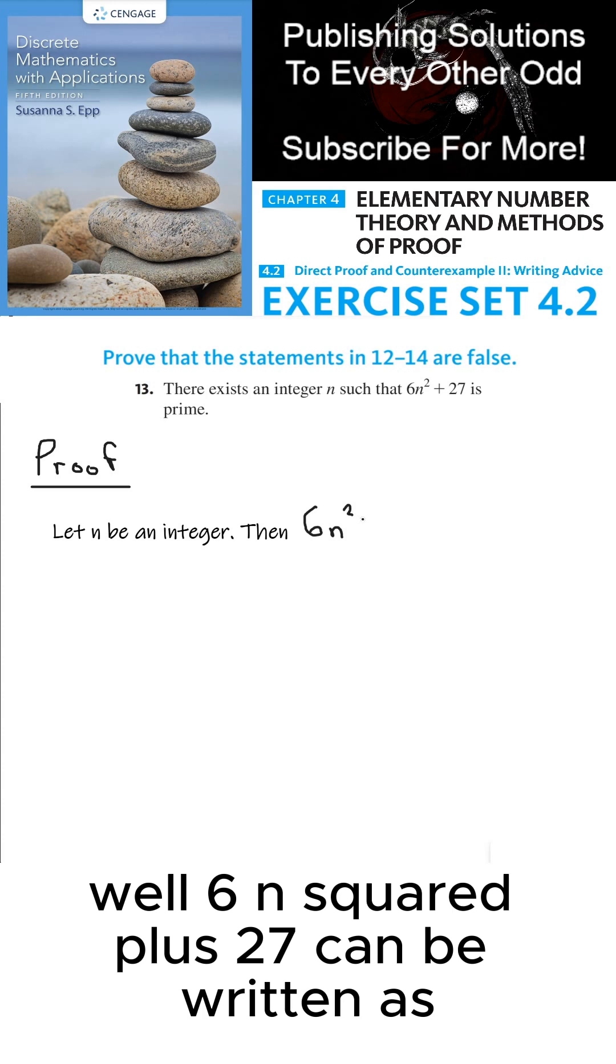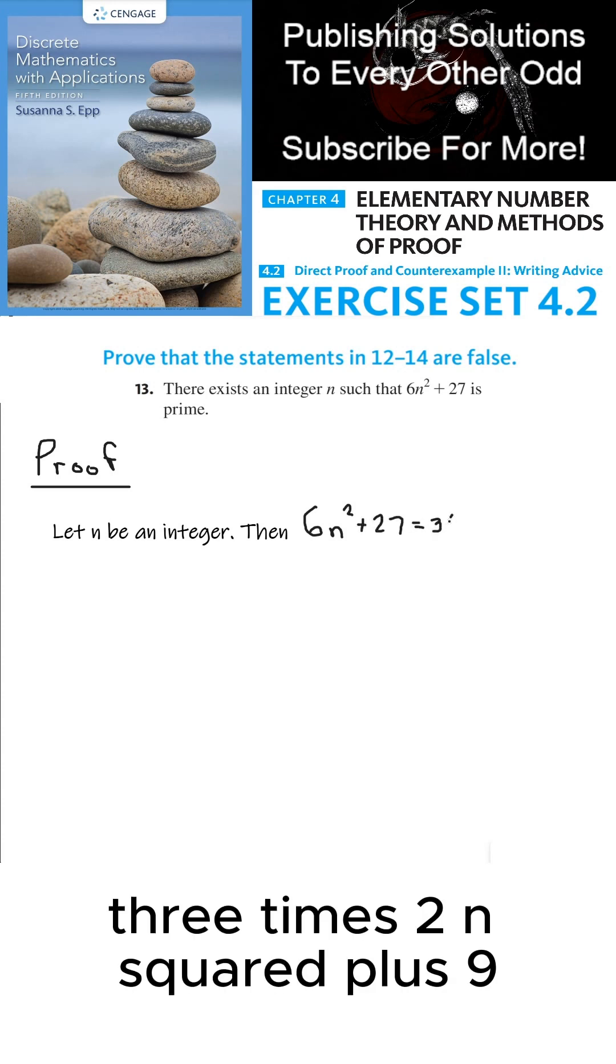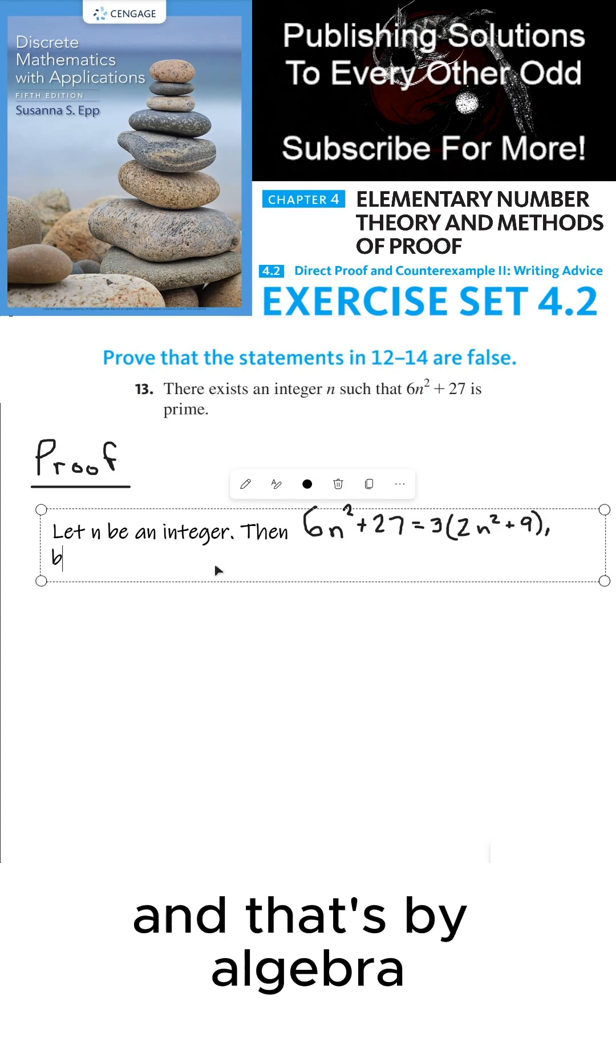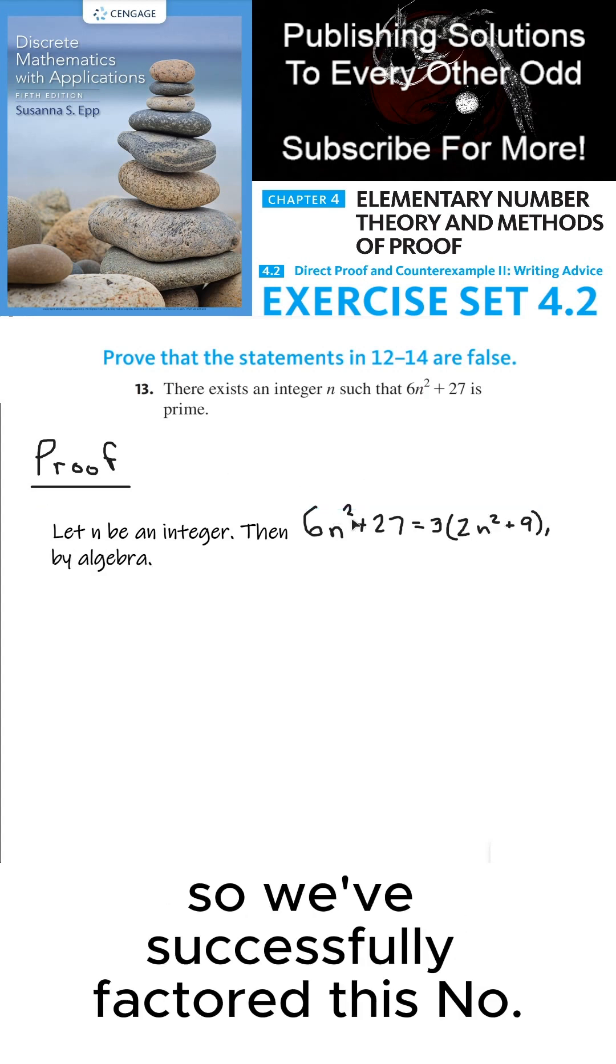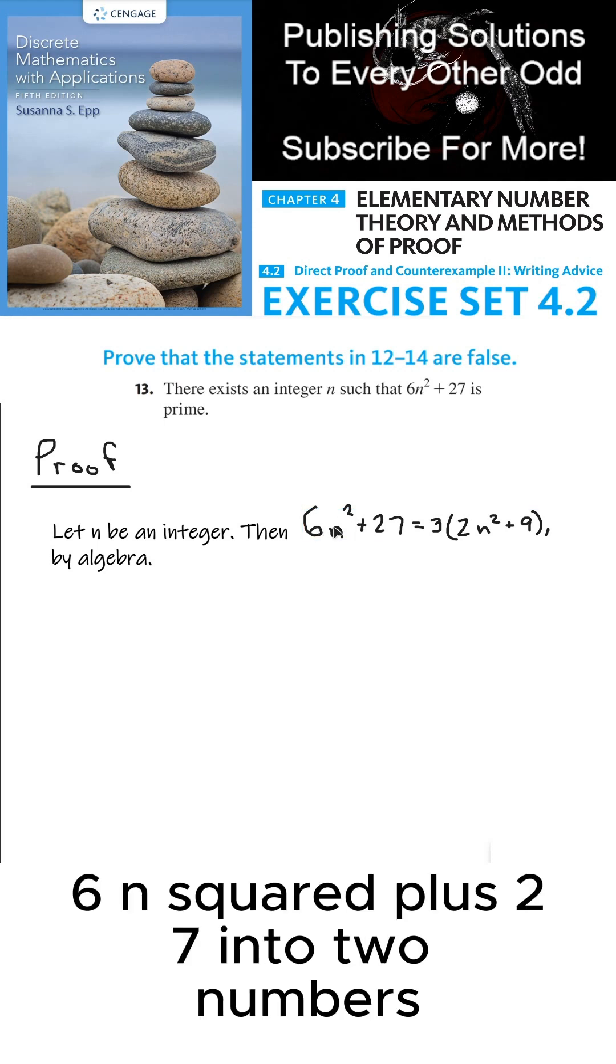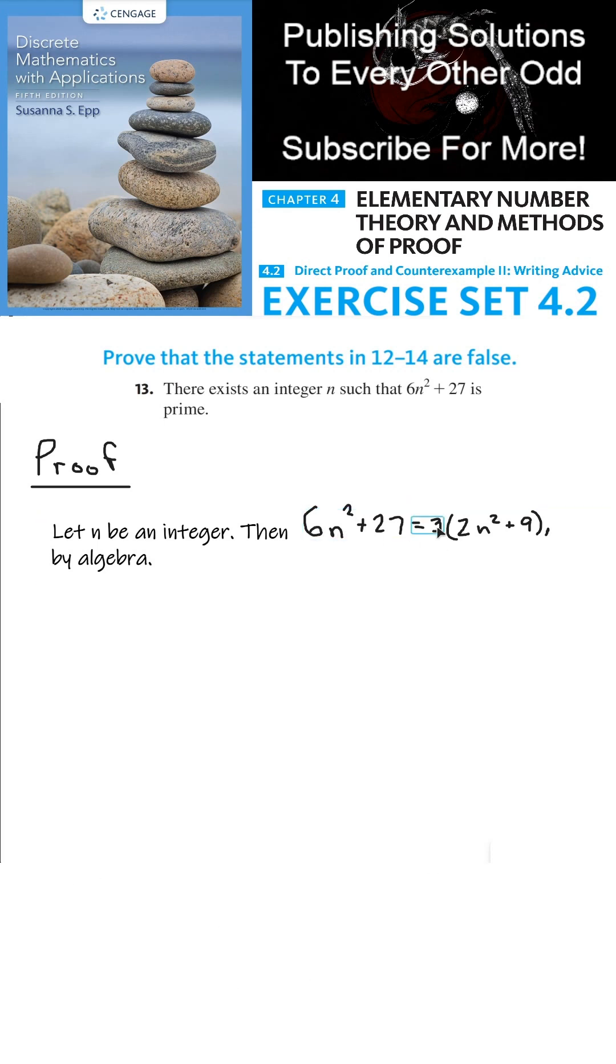Well 6n squared plus 27 can be written as 3 times 2n squared plus 9, and that's by algebra. So we've successfully factored this number 6n squared plus 27 into two numbers, 3 and 2n squared plus 9.